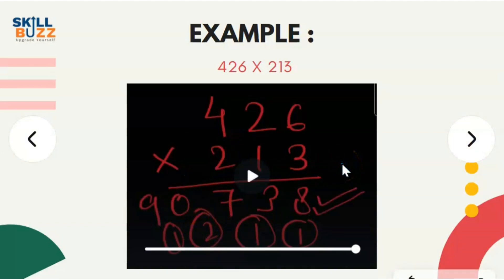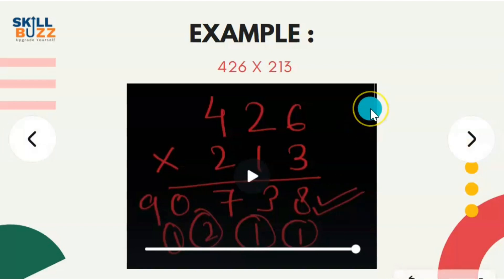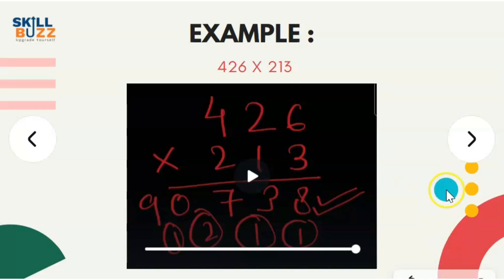Last step: 4 into 2 is 8, plus 1 carry is 9. In three-digit multiplication you will take a lot of time using the normal method, but because you are using this method, it simplifies.